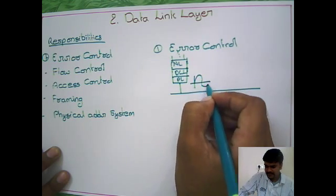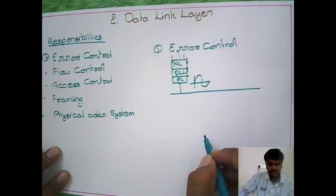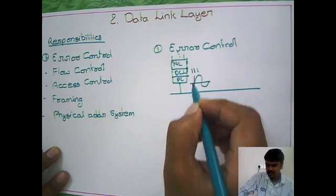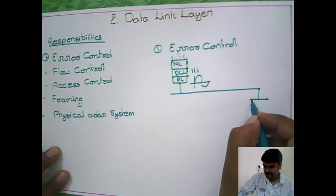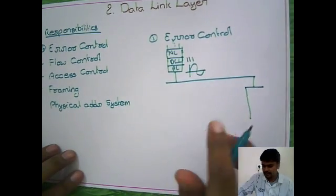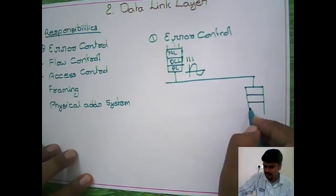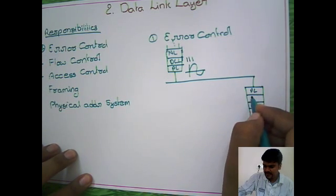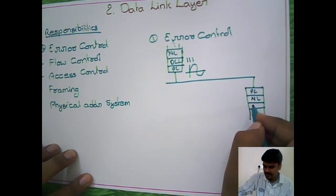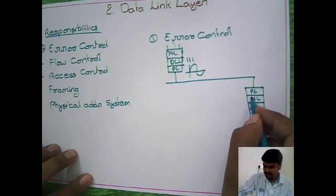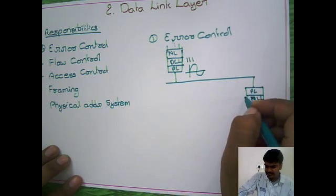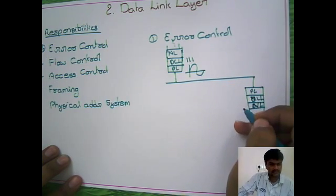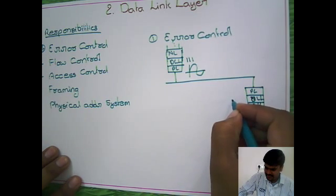Just take an example like this: suppose you are sending data 111 from here. Then after reaching the destination, where you have the physical layer, data link layer, and network layer, it will find out that, assume it is reached as 101.